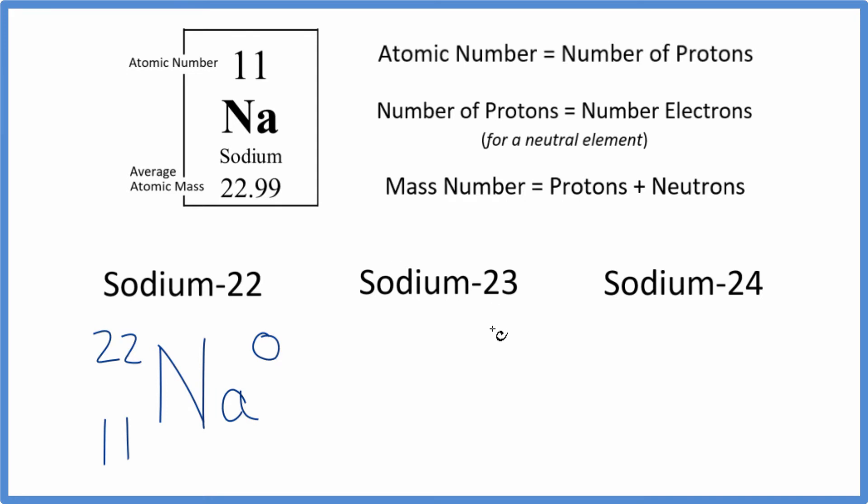For sodium 23, again, we write the element symbol, Na. We know that the mass number is 23. The atomic number for sodium, it's always going to be 11. That's what its identity is. That's how we know it's sodium. And again, this is neutral, so there will be a zero here for the ionic charge.